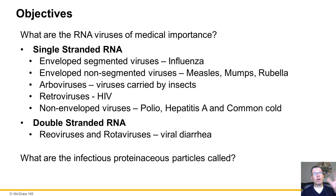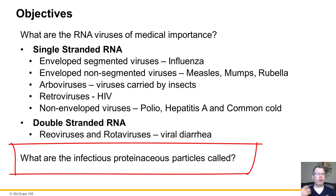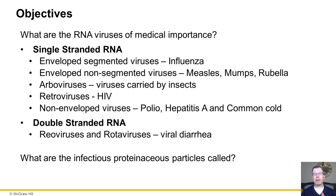We'll also talk briefly about prions. We mentioned them in chapter 6 at the beginning of the semester. They are not a virus — they are a protein particle that causes disease and leads to death. This includes mad cow disease and Creutzfeldt-Jakob disease, and we'll discuss that in this lecture as well.